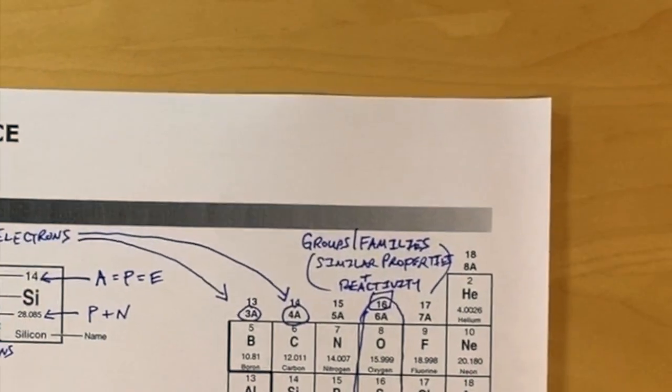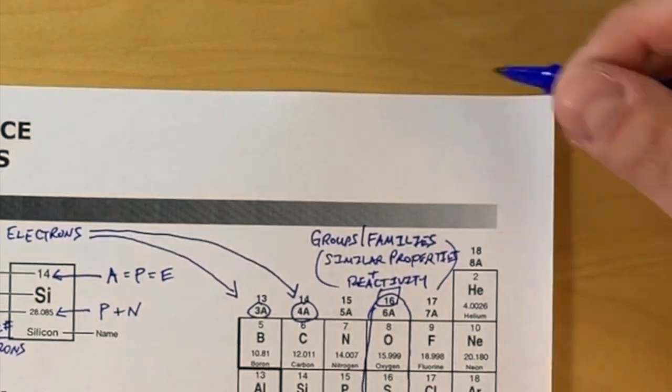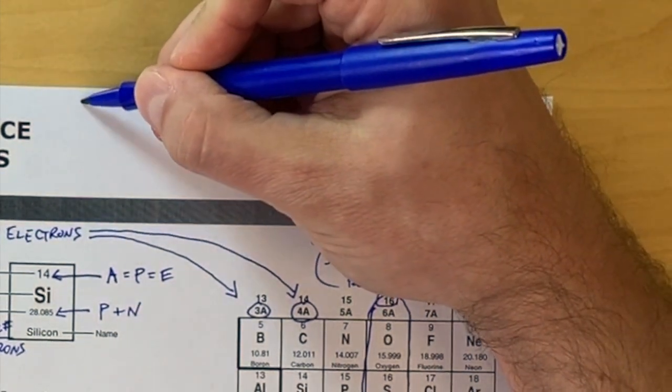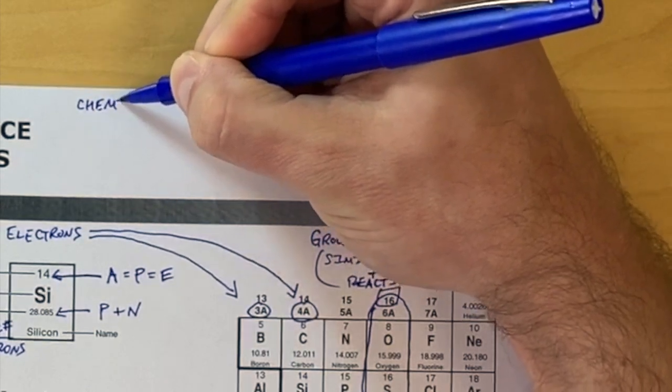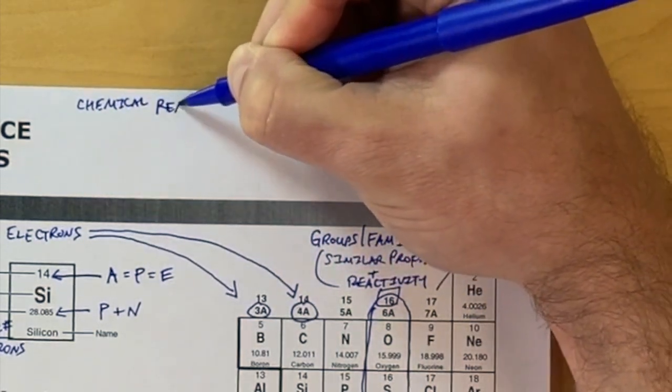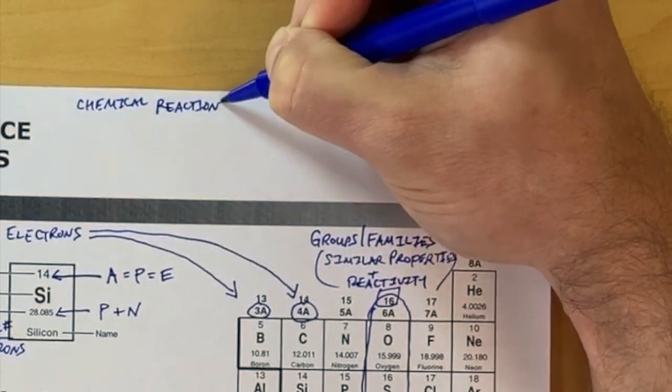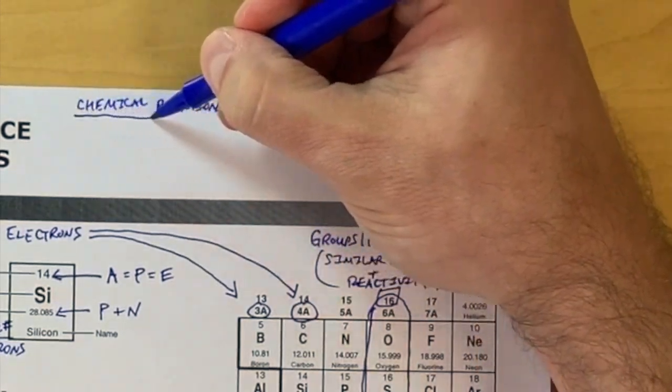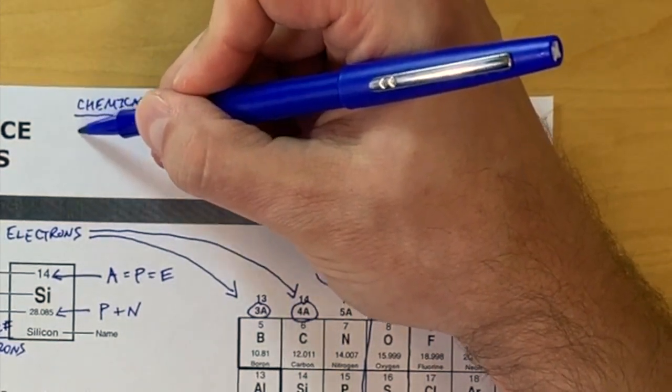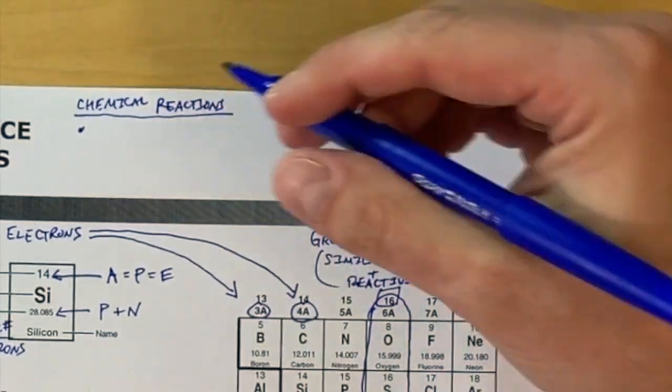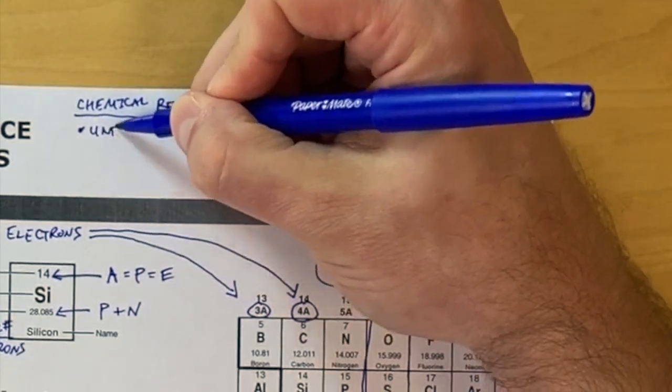The last thing we're going to do on the front of this page is talk about chemical reactions. A chemical reaction has occurred whenever a new substance is formed and it can't be changed back to the original substance. There are several pieces of evidence that we look for to determine if a chemical reaction or a chemical change has happened.